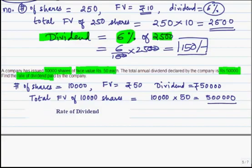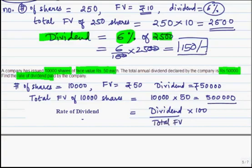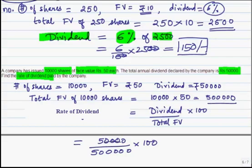On the total face value of Rs 5 lakhs, some percentage of dividend was given and that amount equals Rs 50,000. The rate of dividend will be total dividend paid divided by total face value, multiplied by 100. So rate of dividend equals 50,000 divided by 5,00,000 into 100, which equals 10%. The rate of dividend is 10%.